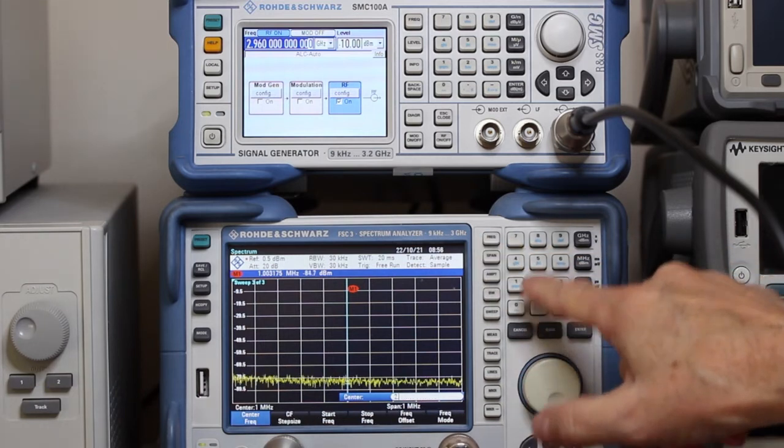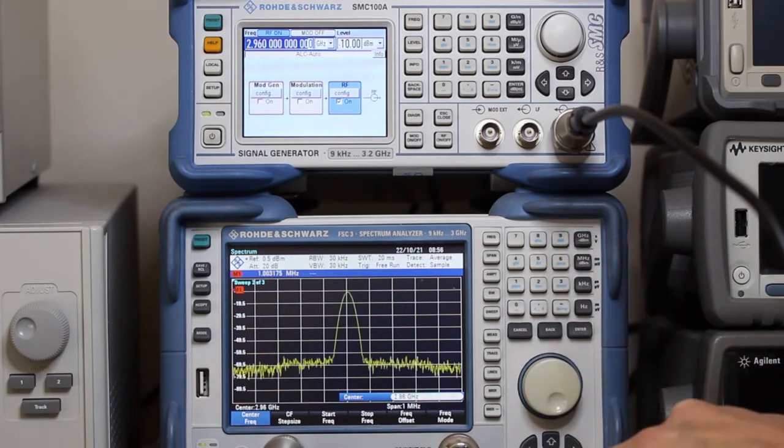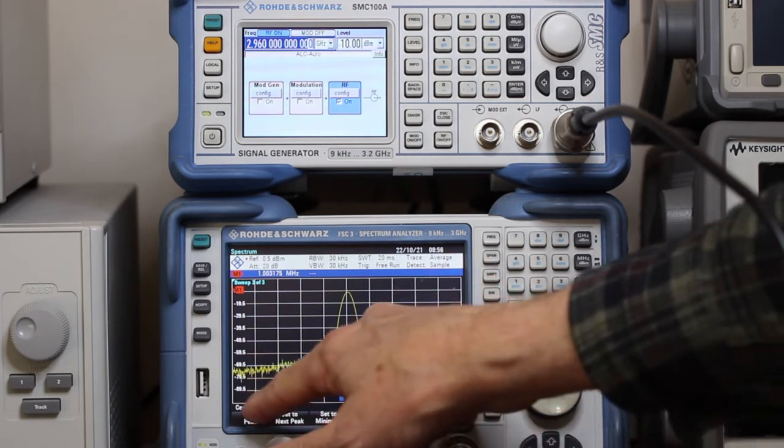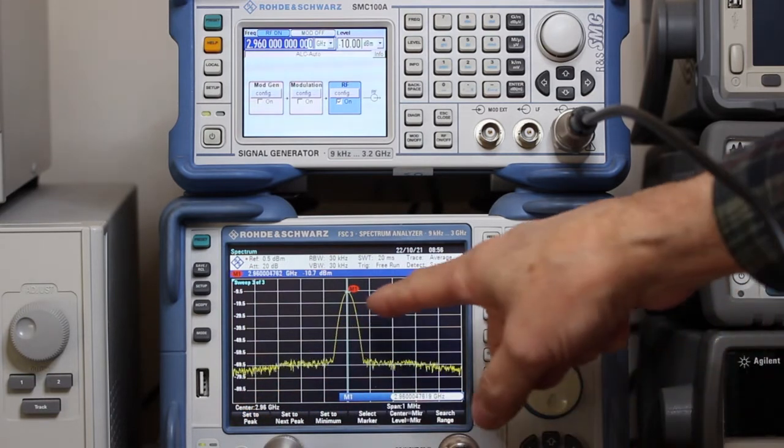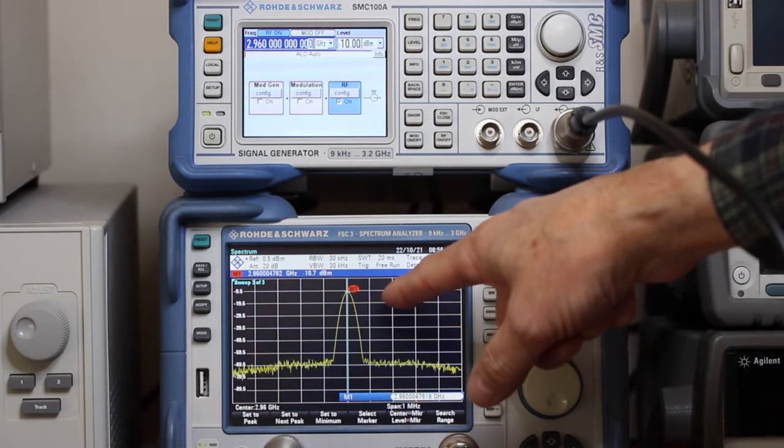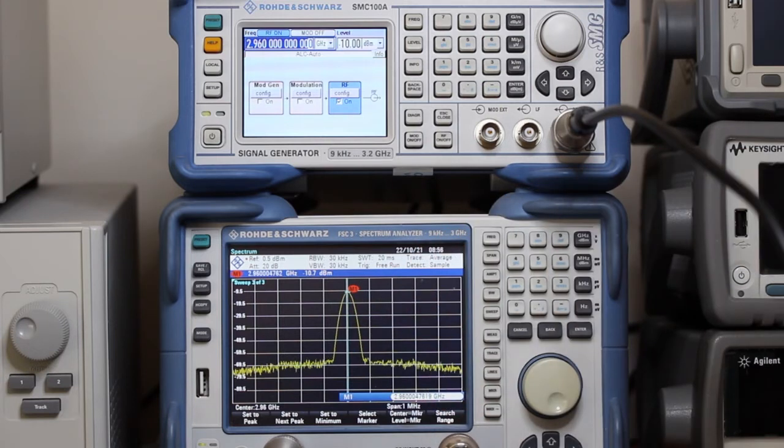We can see down here the spectrum analyzer is measuring minus 10 dBm. Now let's change the frequency to 2.96 GHz, and pick the marker again. Now we can see that the level dropped just 0.7 dBm.